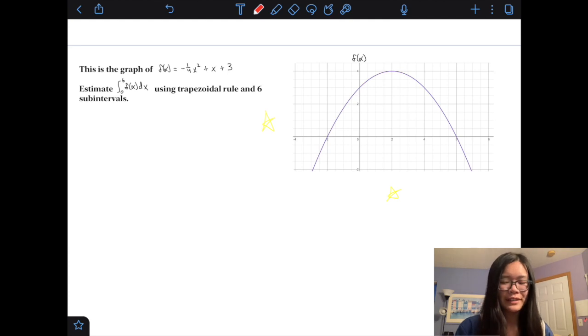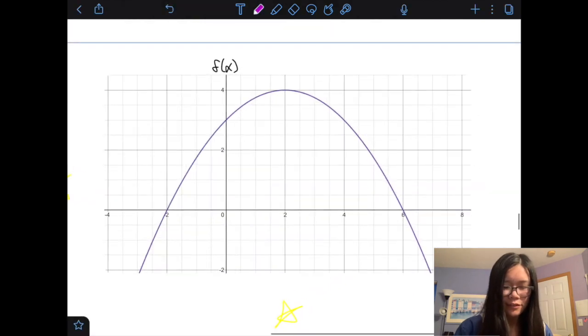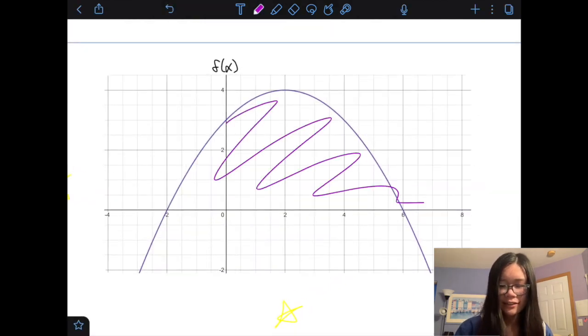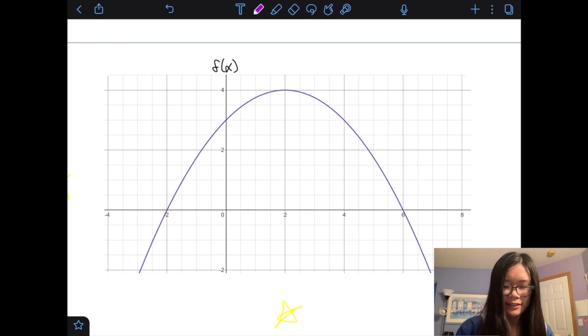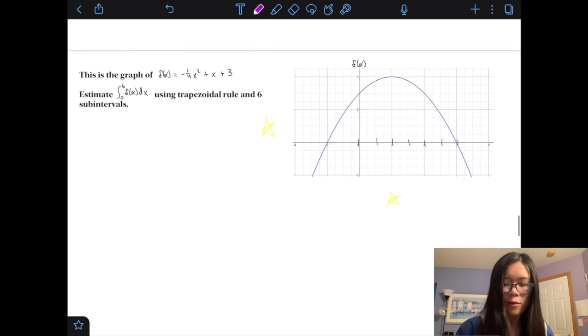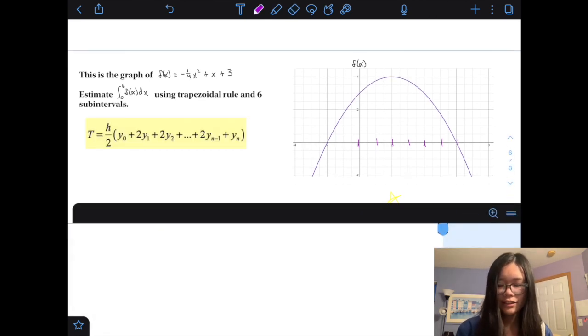The first example problem here is the graph of f equals negative one-fourth x squared plus x plus 3, and we've got a nice graph given to us, and it's f of x. Now, let's estimate the integral of 0 to 6 of f of x dx, using trapezoidal rule, and 6 subintervals. Well, we know that it's going from 0 to 6, so it's all this area, and it wants 6 subintervals, so every subinterval will be a change of x of 1, or height of 1.